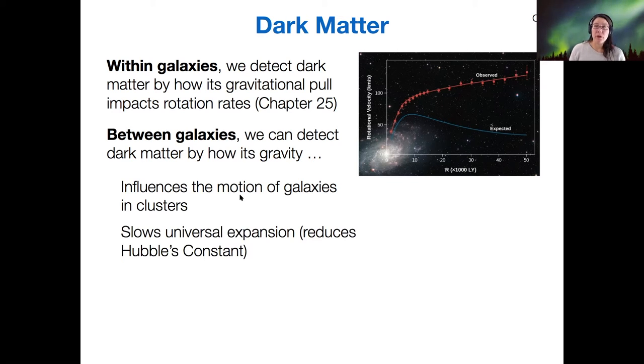We can also see how dark matter within a cluster is pulling on members at the edge of a cluster or just outside of it. If a cluster and a nearby galaxy are moving apart from each other, but they're moving slower than we would expect from Hubble's law, then the slowness is due to the extra pull of dark matter from the cluster. That's a pretty interesting way to measure dark matter.